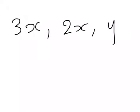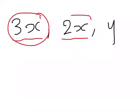For example, 3x, 2x, and y. The ones that have the same variable are 3x and 2x, and they also have the same power. The power that they both have is one, so these two are like terms. This one, y, would be the odd one out.